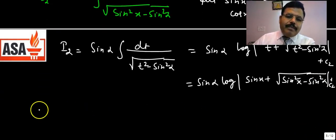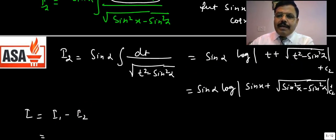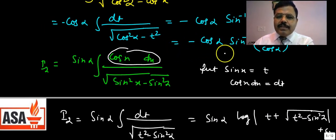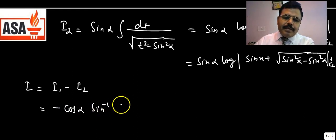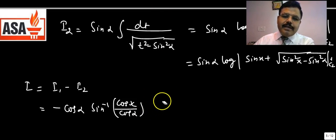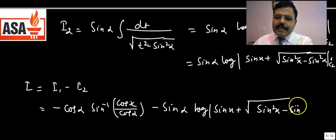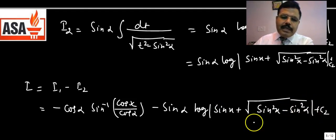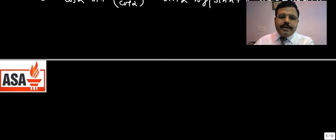Therefore, the final answer is I = I1 − I2: −cos α · sin⁻¹(cos x / cos α) − sin α · log|sin x + √(sin²x − sin²α)| + c, where c = c1 + c2 combined as one constant. That is the answer to this question.